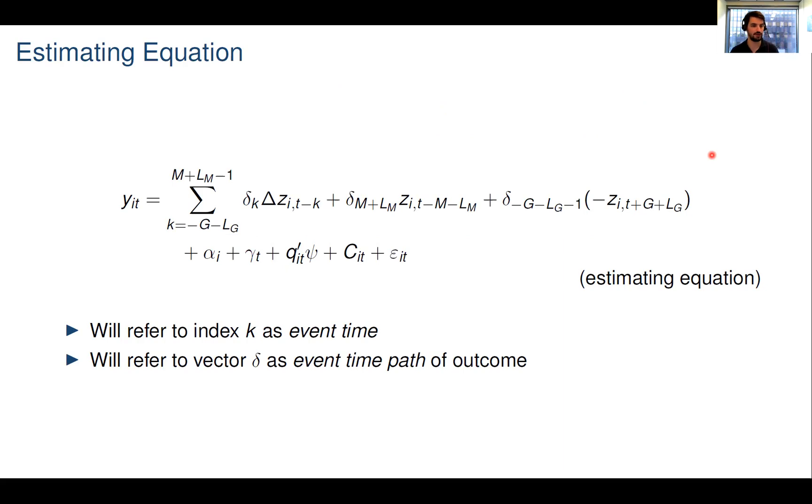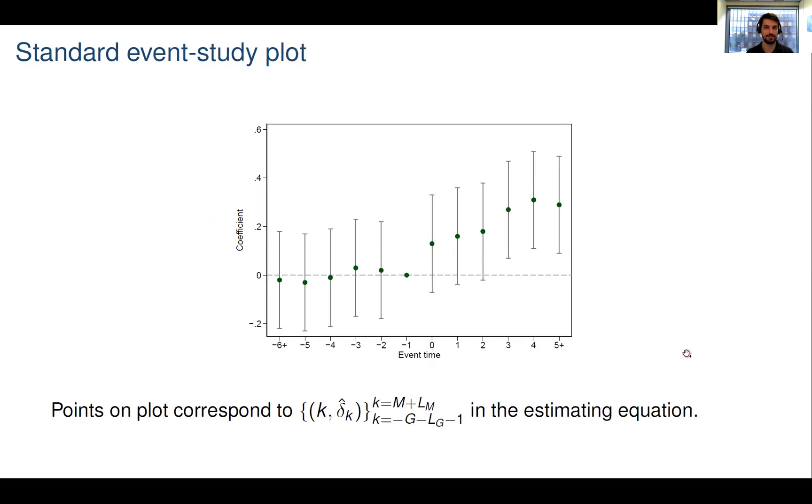To quickly recap, y is the outcome variable of interest here, z denotes the policy variable, and we will continue to refer to k as event time and the vector delta as the event time path of the outcome. What that means is that we can plot delta against k, and what we get is our typical event study plot. Today I'm going to talk about a number of suggestions for the construction of these plots, and our hope is that these make event study plots more informative. Many of these are common practice already, some less so.